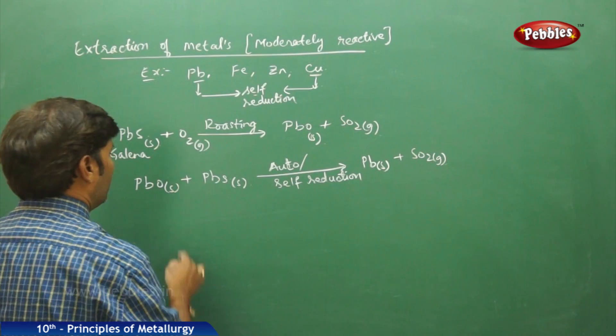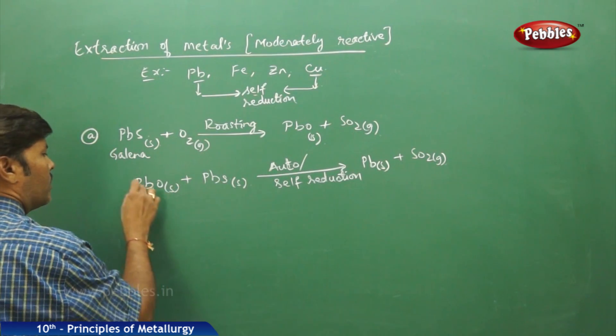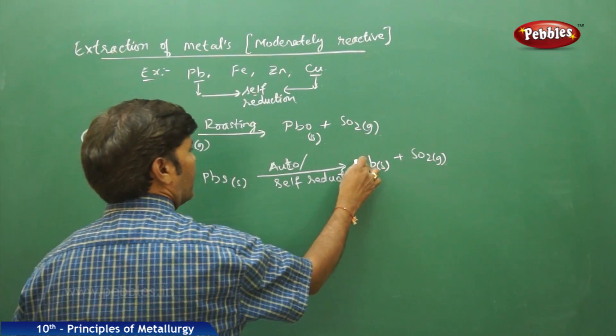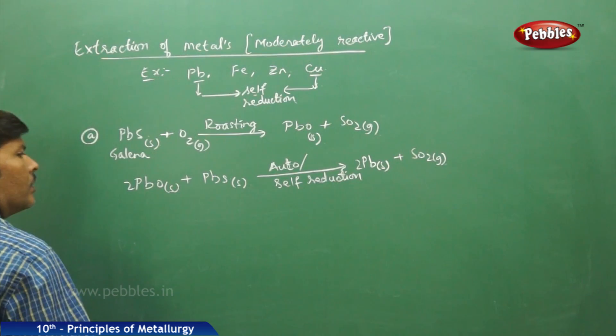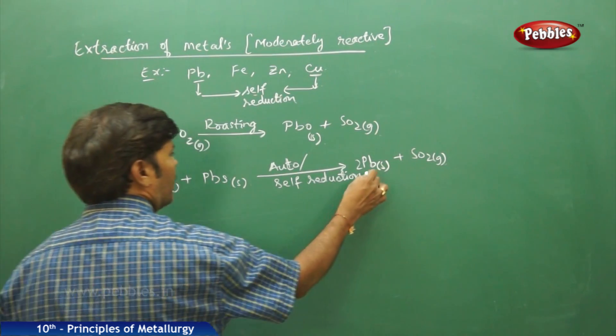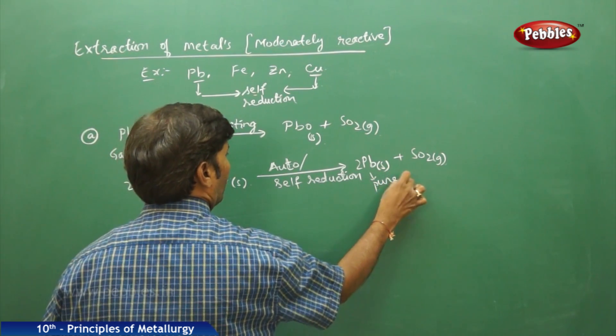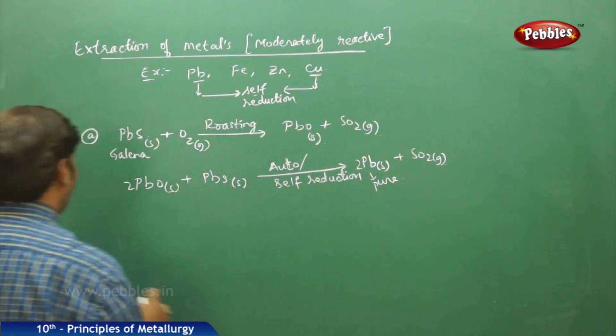To balance the equation, there are two oxidants, so take 2 on each side. The lead obtained here is in pure form.